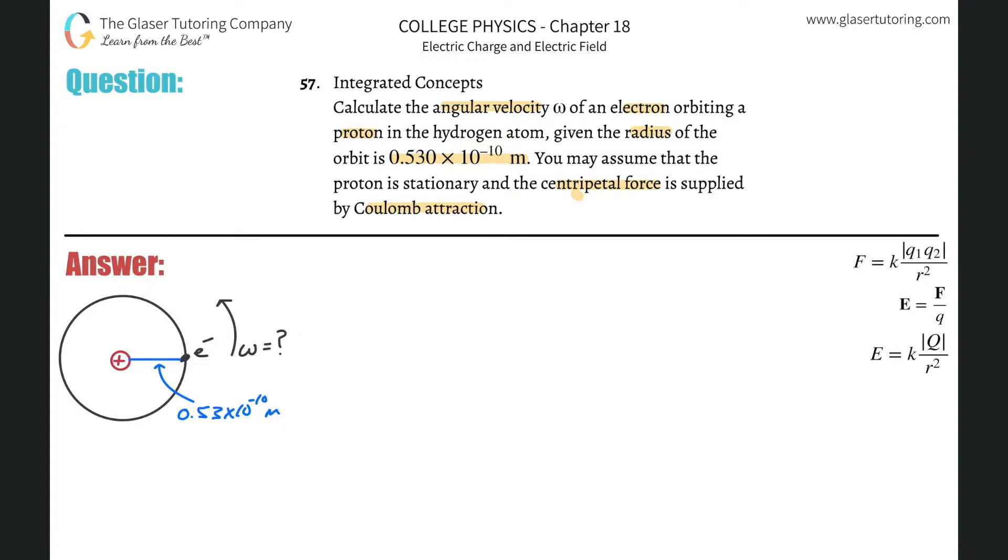So the first thing's first. Pretend this picture were static. You've got a proton here, you've got an electron here. What do you know about what's going on between them? How are they interacting? Well, they're interacting via this attractive force. Proton is positive, electron is negative. And therefore, there should be an attractive force.